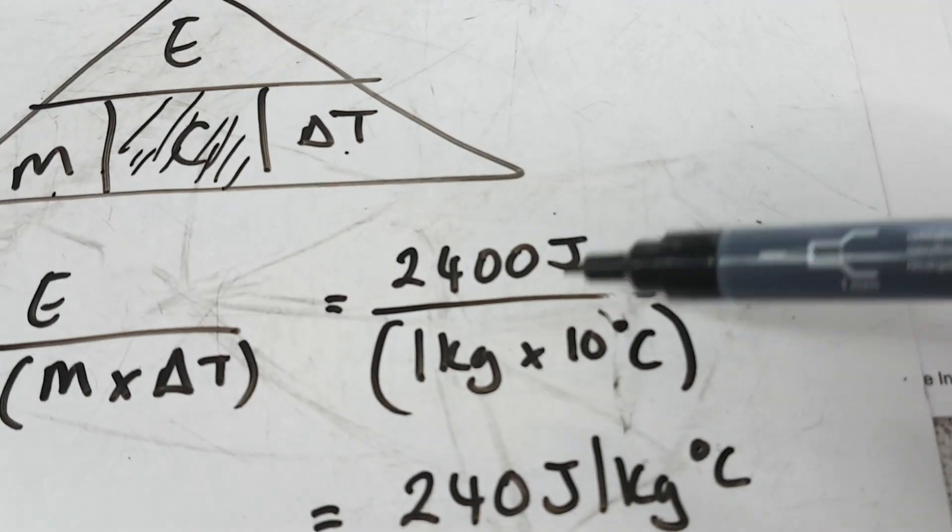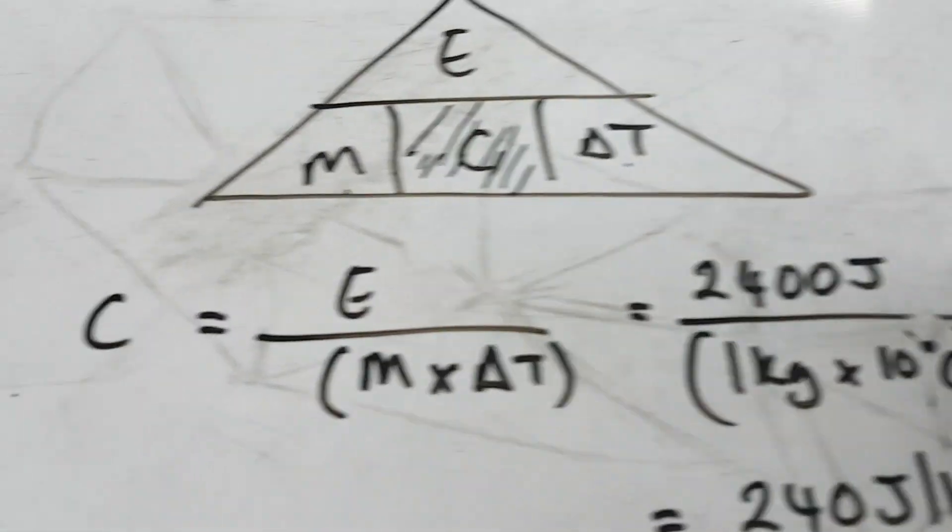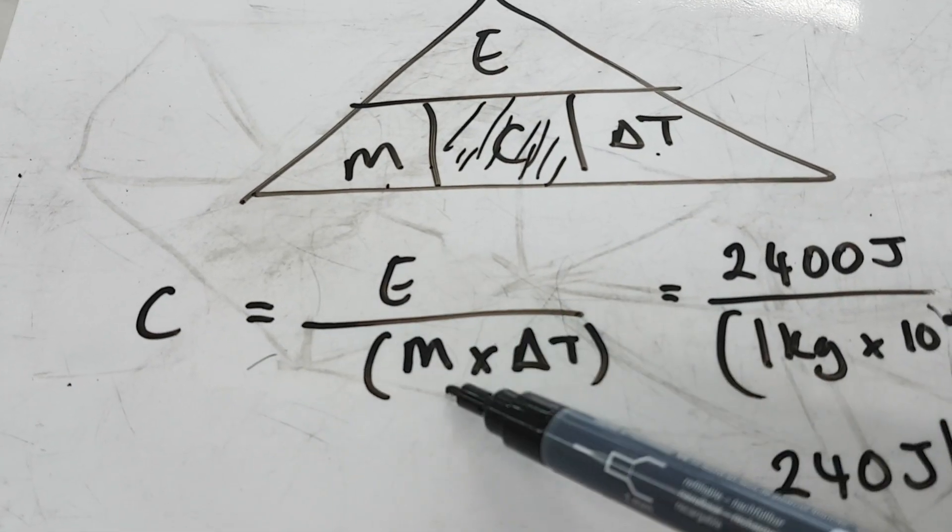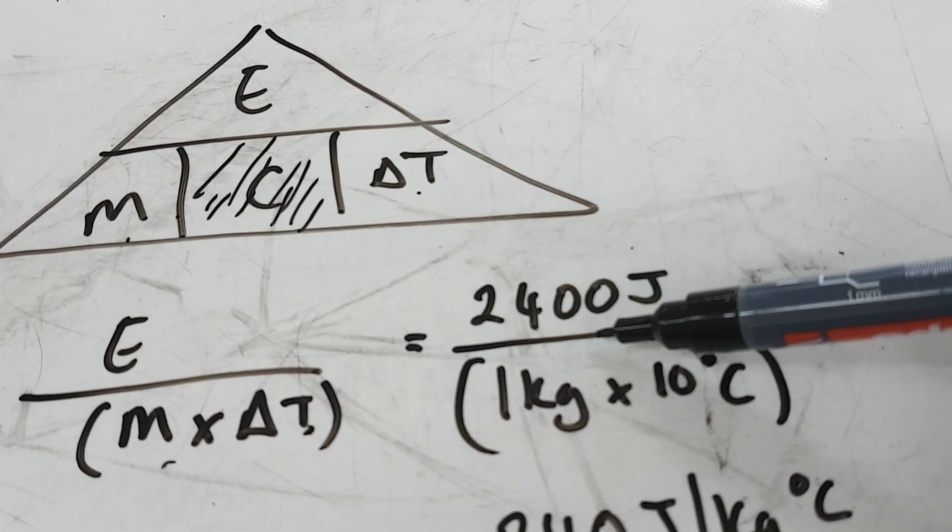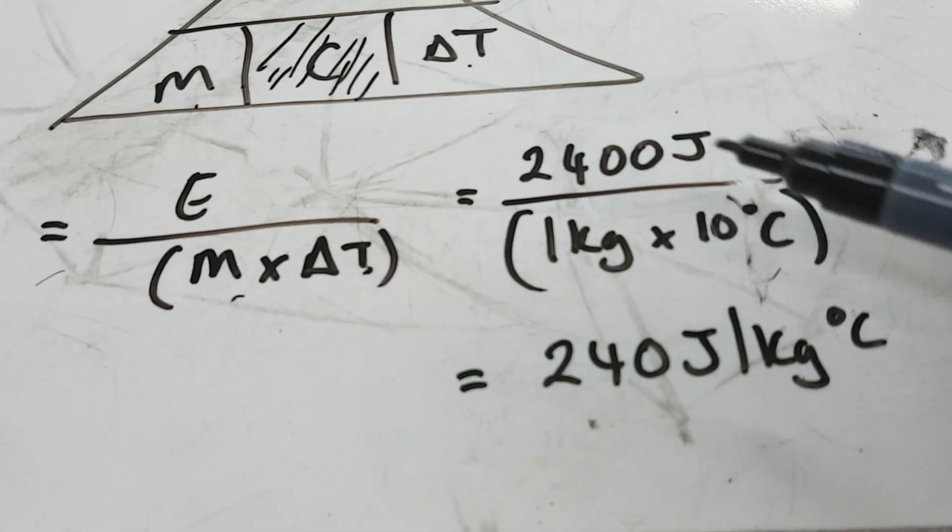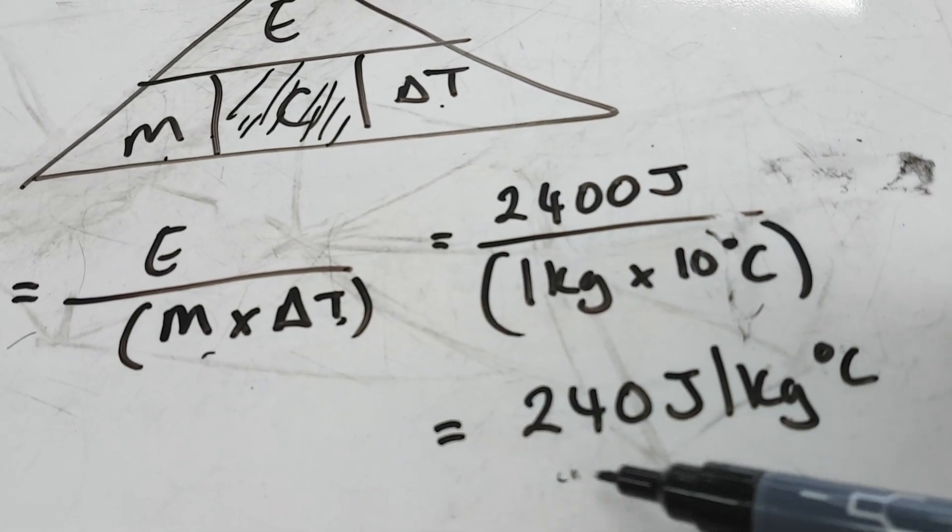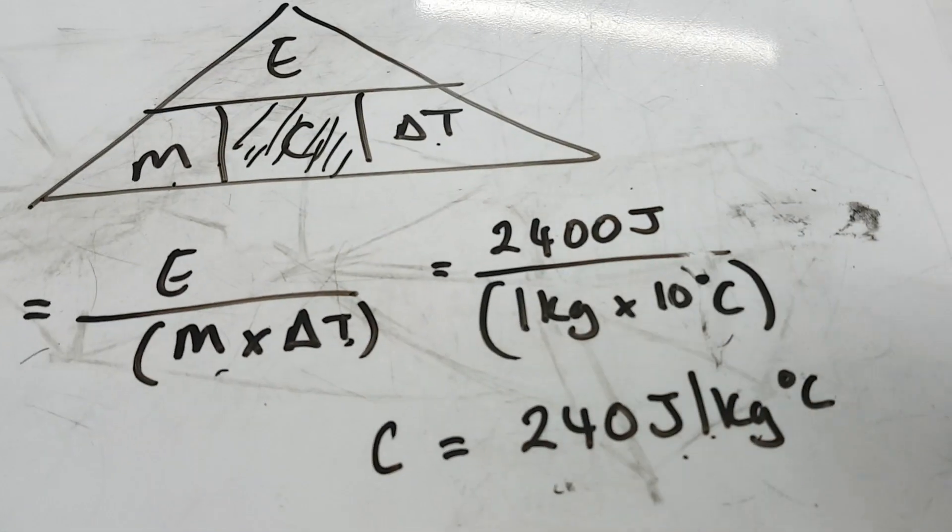So, like I said guys, these numbers are made up, but I just want to show you how to do it. So once I've rearranged my equation to C equals E divided by M times change in temperature, we're going to have 2400 divided by 1 times, our change was 10. Which will give you an answer of 240 joules per kilogram degree Celsius, and that is our specific heat capacity. And that will conclude your experiment.